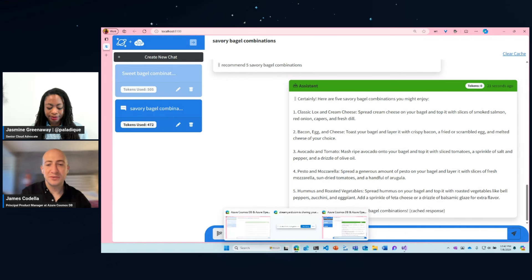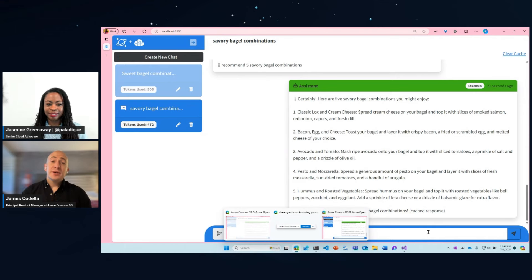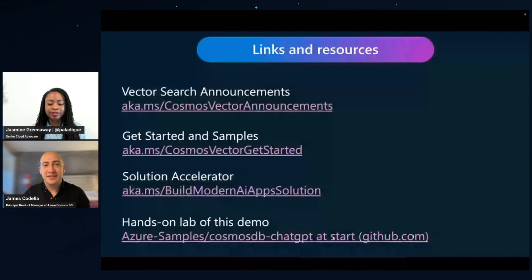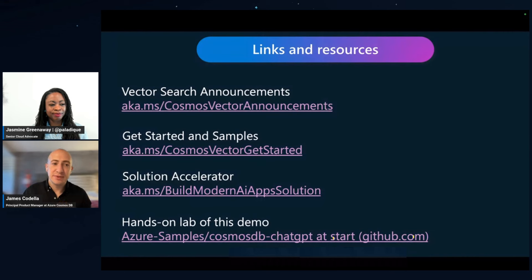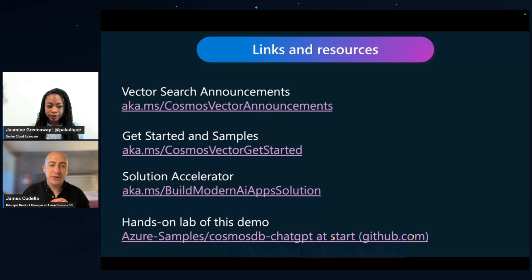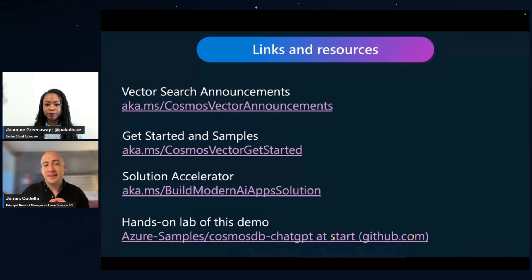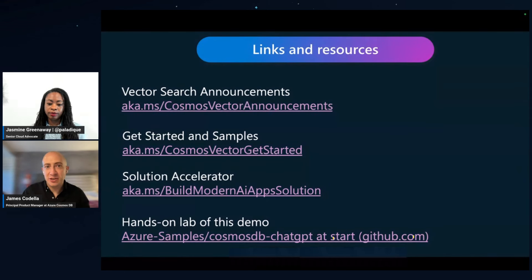That's a great example of using Cosmos DB for doing some really cool stuff in your application. Thanks Jasmine. That pretty much wraps up what we're going to talk about here today. We have some links and resources to get you started. You can check out all our vector search announcements for Cosmos DB at the AKA MS link, a getting started and samples page, a solution accelerator that walks through a more complete version of this scenario, and at the bottom a link to the simple GitHub repository example that Jasmine showed.